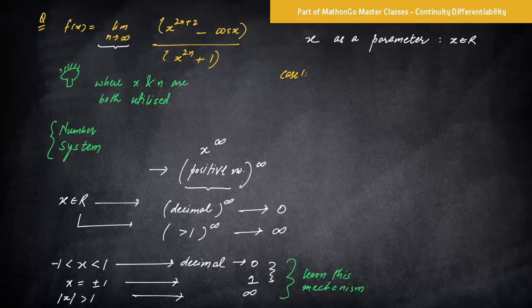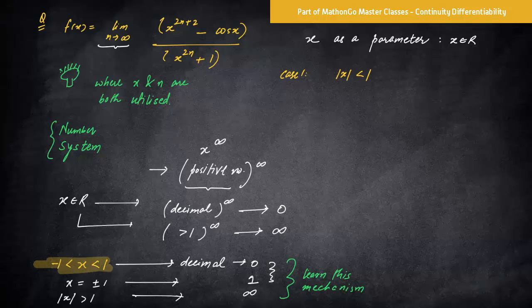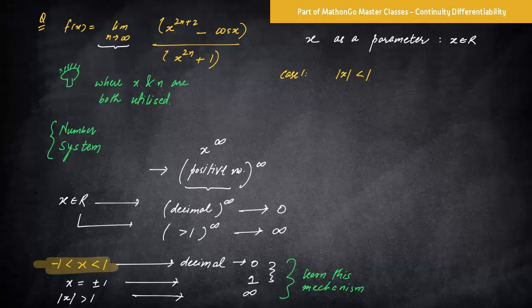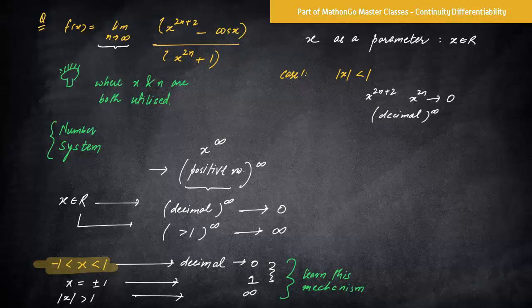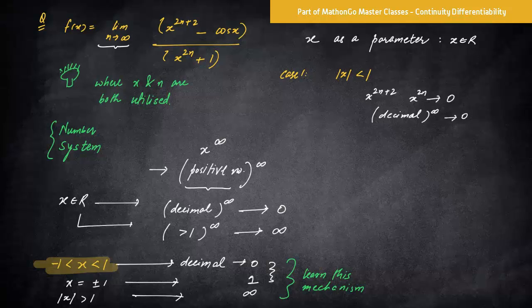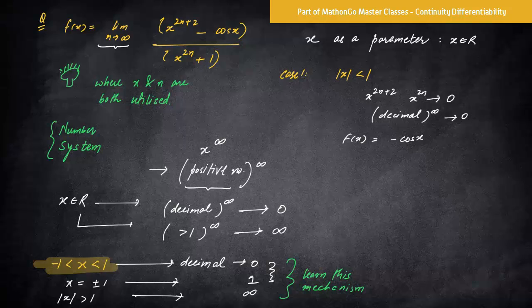So case one, please see how I am writing also, which is very important. So this case, which I have written here, that is x minus 1 to 1 can be converted to modulus x less than 1. So if this is the case, then what do you have is that this plus 2, x raised to power 2n both will become zero because this will be decimal raised to power infinity. This becomes something like decimal raised to power infinity, which is nothing but zero. So the value would become then f(x) would be just simply minus cos x, because you can just remove these terms from the question.